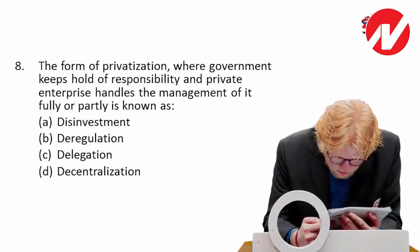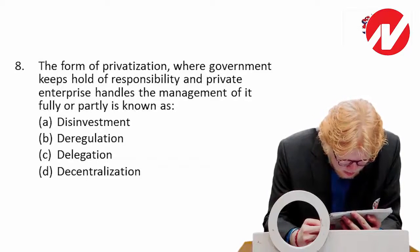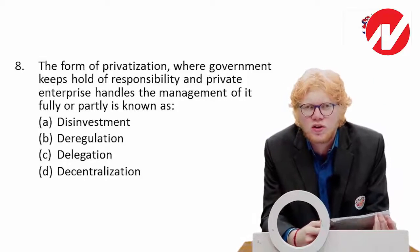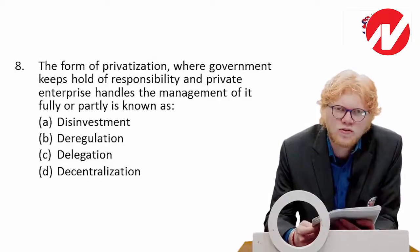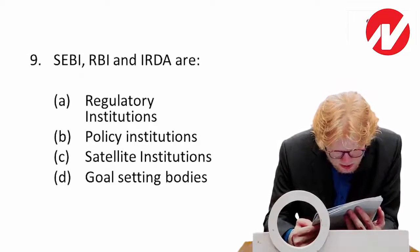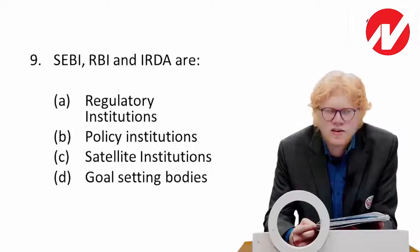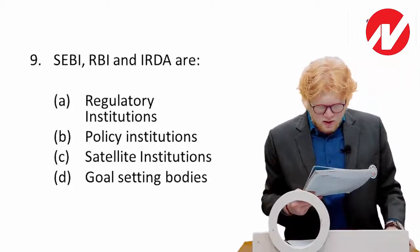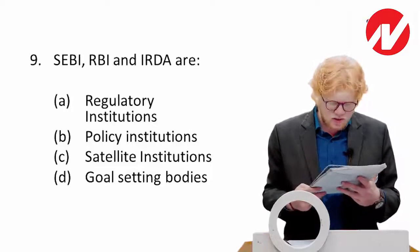Next: the form of privatization where the government keeps hold of responsibility and private enterprises handle the management — fully or partly — is known as delegation. When we hold responsibility but pass the actual work on to someone else, we are delegating. So it is a form of delegation, which is part of privatization. Next: SEBI, RBI, and IRDA are regulatory institutions — the first answer is correct. SEBI regulates the stock market, RBI regulates the banks, and IRDA regulates insurance businesses.